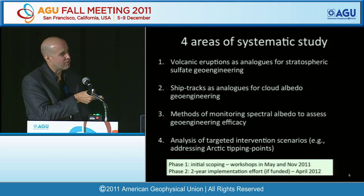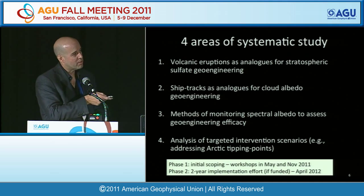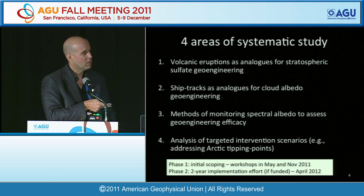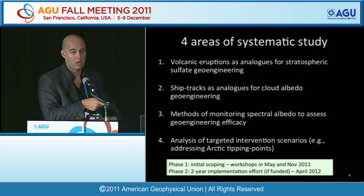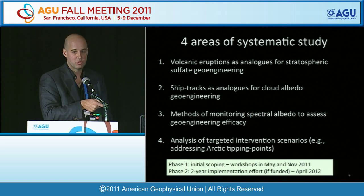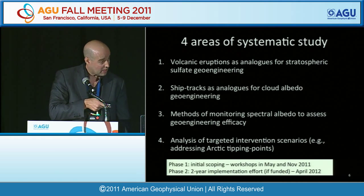The thrusts that emerged from this study phase are: looking at volcanic eruptions as analogues for stratospheric sulfate; ship tracks and other emissions as analogues for cloud albedo geoengineering; monitoring and observational methods for assessing spectral albedo on space-time scales relevant to managing cloud albedo; and analysis based on targeted intervention scenarios — addressing specific impacts rather than trying to geoengineer the entire climate at a global scale.